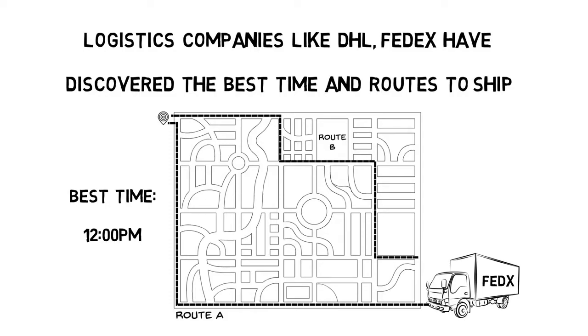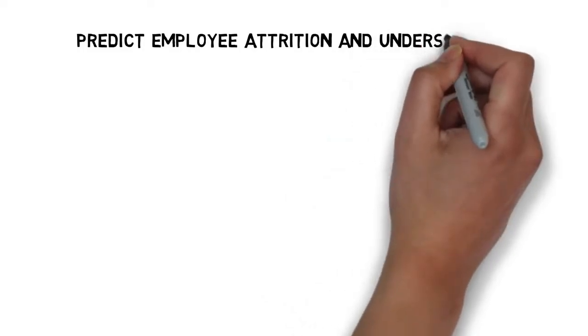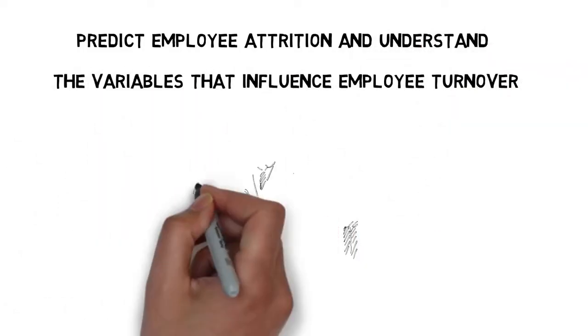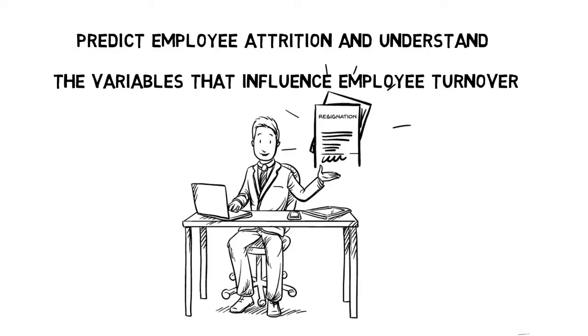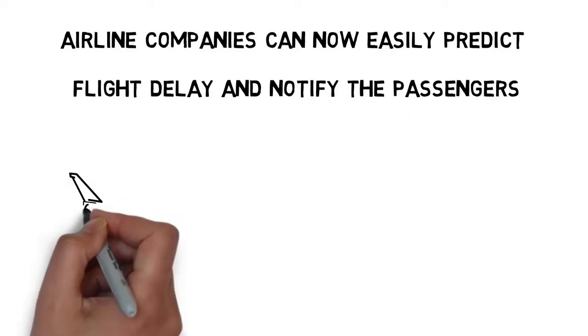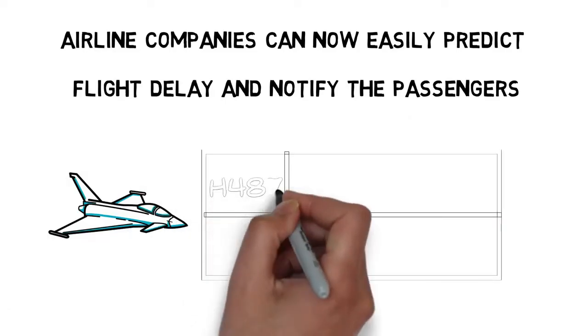With data science, it is possible to not only predict employee attrition but also understand the key variables that influence employee turnover. Also, airline companies can now easily predict flight delays and notify passengers beforehand to enhance their travel experience.